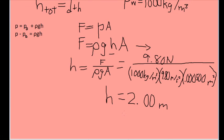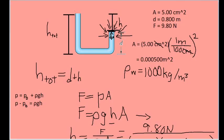We get 2.00 meters for the height difference between the water levels in each arm of the tube.